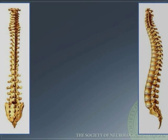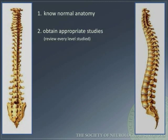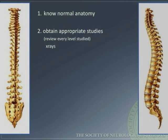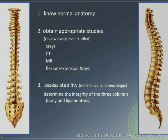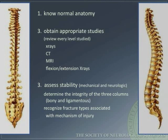In summary: know normal spine anatomy; obtain appropriate studies with x-rays, CT, MRI, and flexion-extension films; always assess stability, both mechanical and neurologic; determine the integrity of the three columns; and recognize fracture types associated by mechanism of injury.